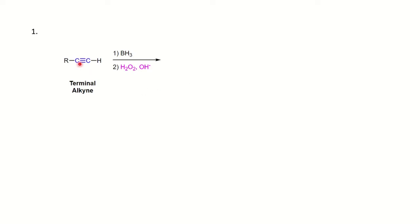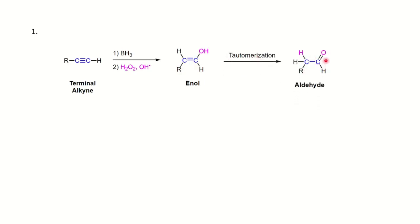Now let's quickly see the reaction of terminal alkynes. With the same BH3 reagent on a terminal alkyne, following Markovnikov's rule, hydrogen adds to the substituted carbon, and syn addition takes place. The oxidizing agent then converts BH2 into OH. Since the product is an enol, tautomerization occurs, and the enol converts into an aldehyde. So terminal alkynes are converted into aldehydes in the presence of BH3·THF followed by H2O2/NaOH.